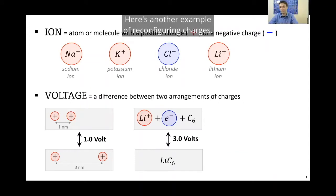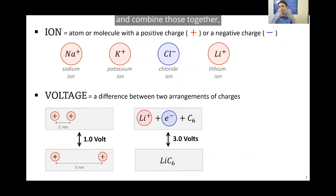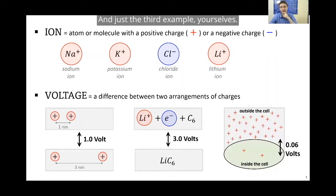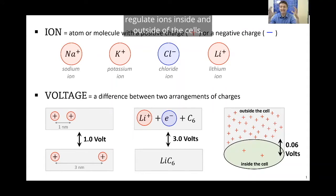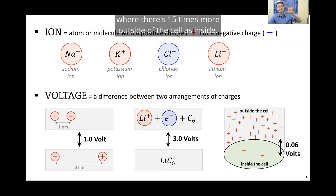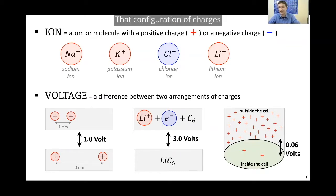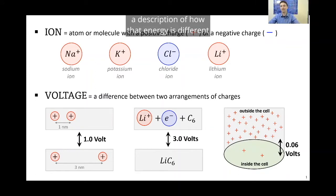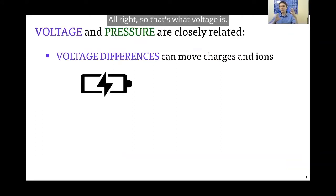Here's another example of reconfiguring charges. If you take a lithium ion and an electron and some graphite C6 and combine those together, that's a difference of about three volts. And just a third example: your cells, human cells, especially things like neurons, regulate ions inside and outside of the cells. They have pumps and channels and transporters that move ions around. Here you can see an example like sodium, where there's 15 times more outside of the cell as inside. That configuration of charges also sets up a voltage difference—a description of how that energy is different if those charges were allowed to move.